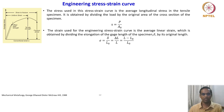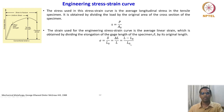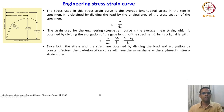We are talking about a bulk property, connecting the strict definition of strain and stress with average stress and average strain, which is obtained by dividing the elongation of the gauge length of the specimen (δ) by its original length L₀. Since both the stress and strain are obtained by dividing the load and the elongation by constant factors, the load-elongation curve will have the same shape as the engineering stress-strain curve.